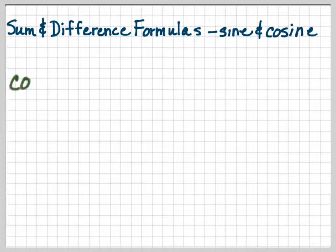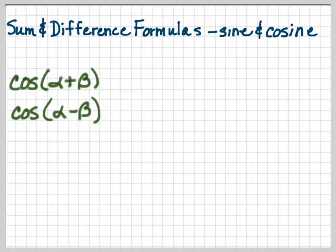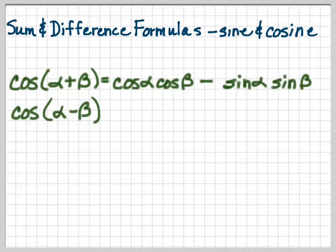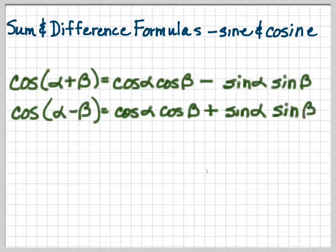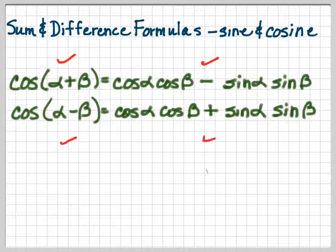Now we have sum and difference formulas for both sine and cosine. We started off with just the cosine difference. Now we have a difference of cosine, a sum of cosines, a difference of sines, and a sum of sines. Let's start off with cosine(α+β) and cosine(α−β). When you have cosine, it's going to be cosine times cosine and sine times sine. If it's a plus, it's going to become a minus. So cosine of alpha minus beta is going to be cosine cosine plus sine sine. When doing cosine of either sum or difference, if it's the sum, then you subtract; if it's the difference, then you add.